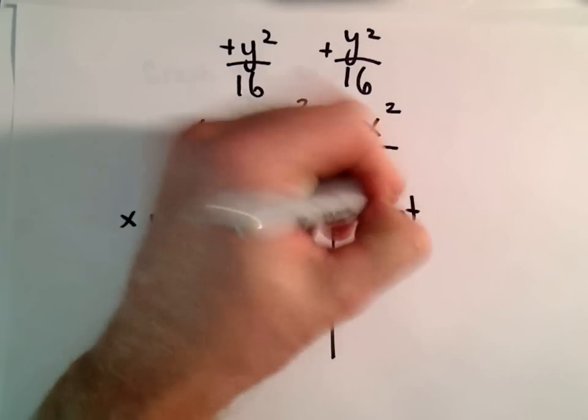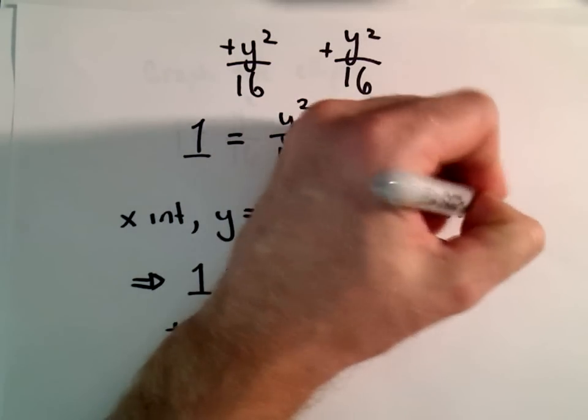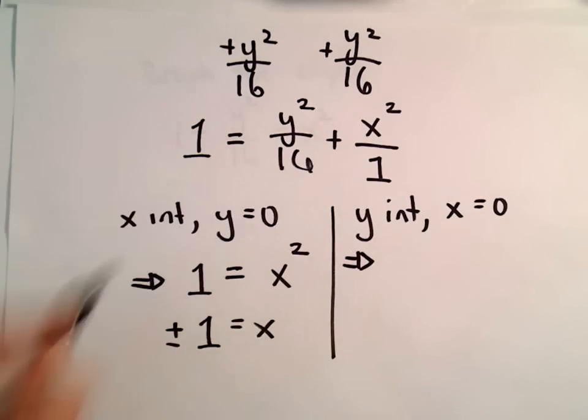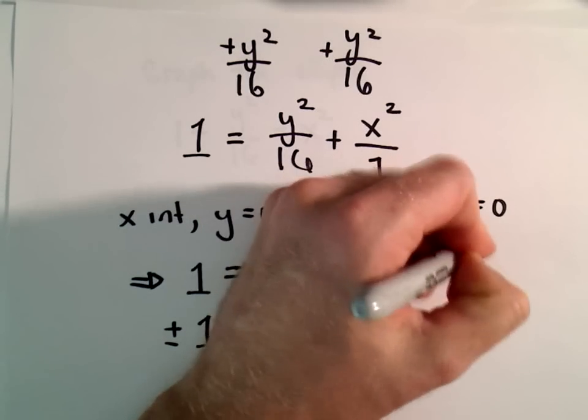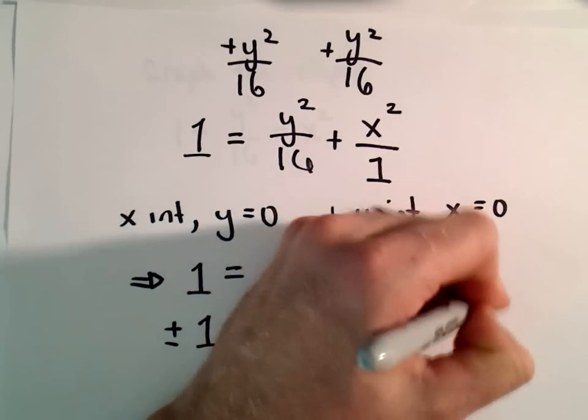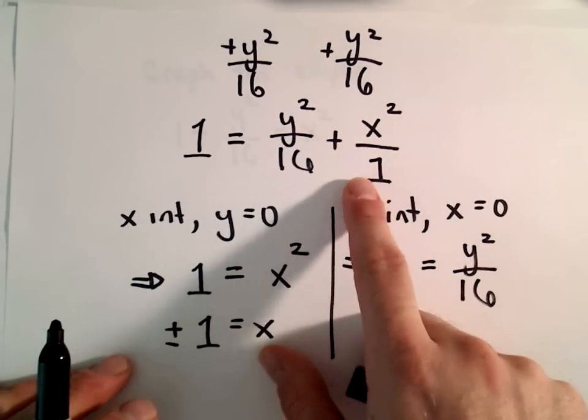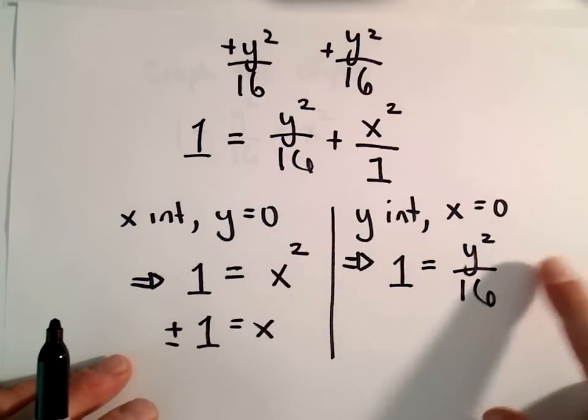To find the y intercepts, we'll let x equals 0. If we let x equals 0, in our equation we'll have 1 equals y squared over 16 plus 0 squared over 1. So we'll just leave that term out.